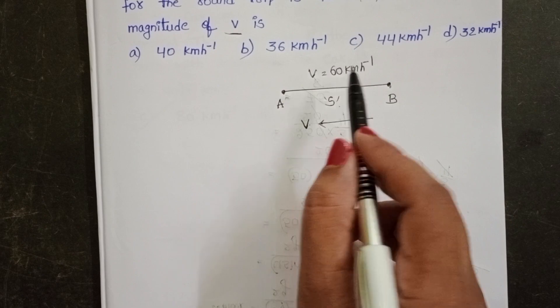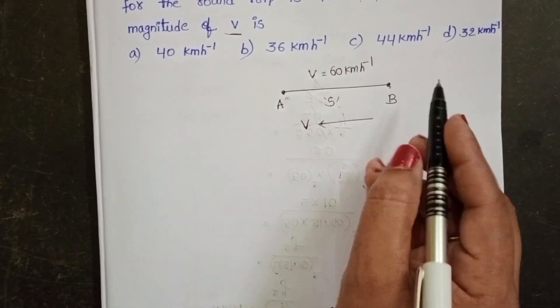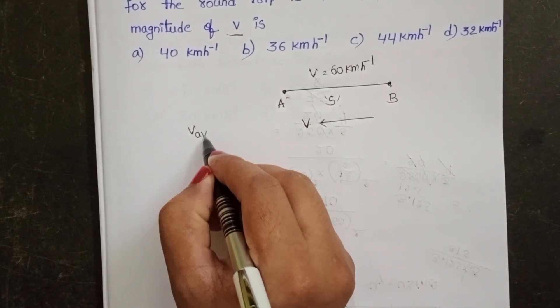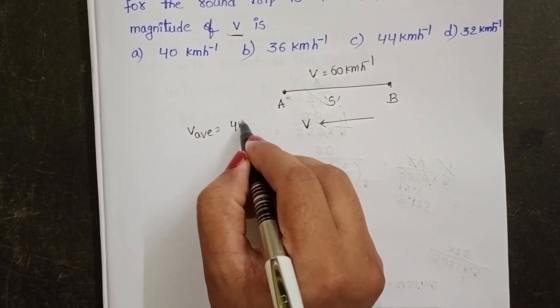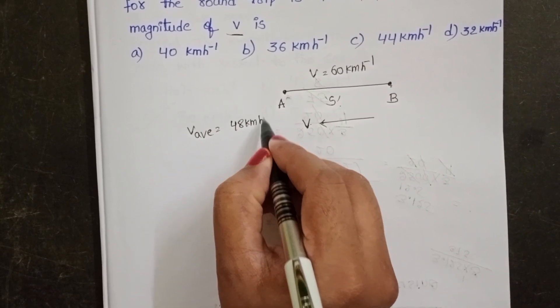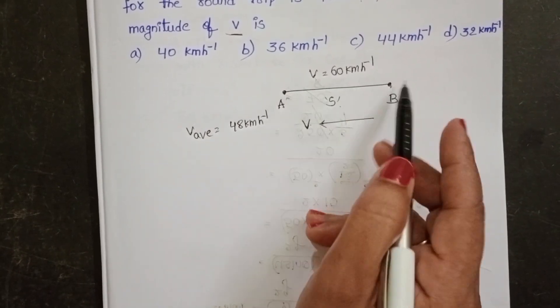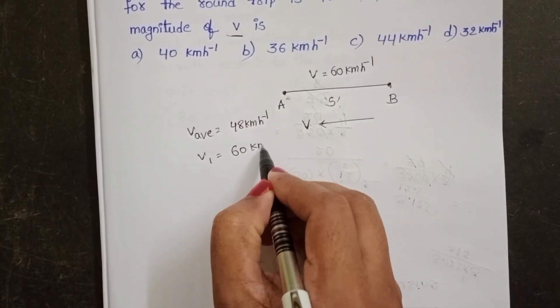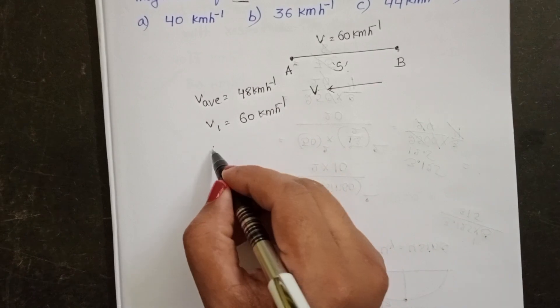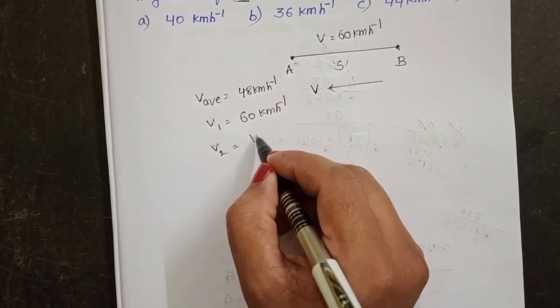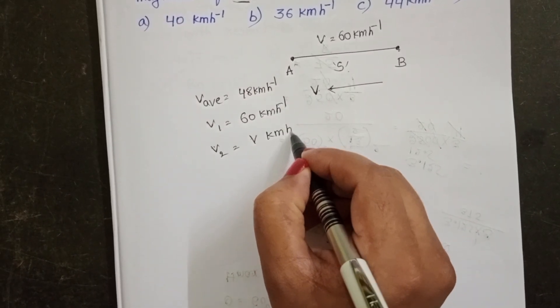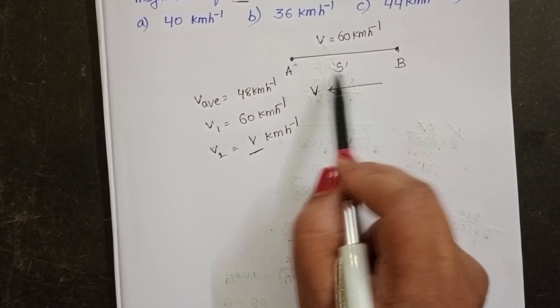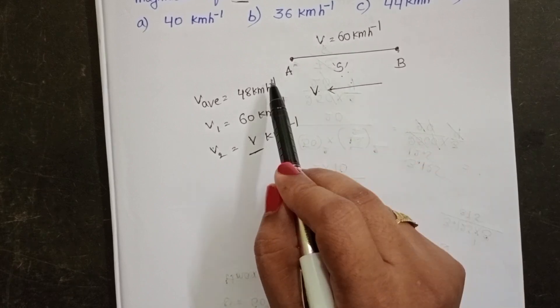So we know the average speed of the car also. Average speed equals 48 km per hour. Initial speed for the forward journey is 60 km per hour. Speed of the car for the return journey is V km per hour. Distance is same for forward journey and backward journey.